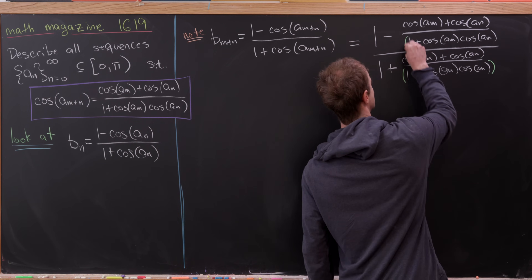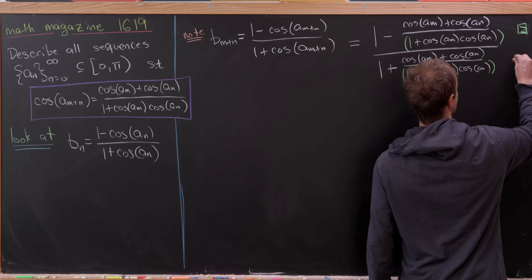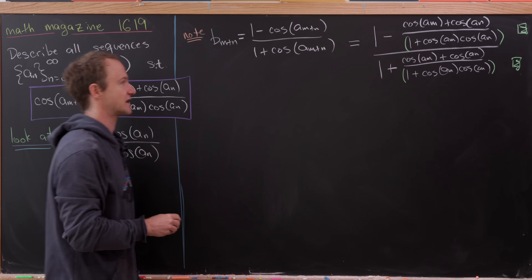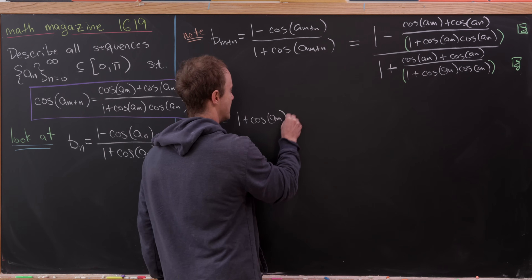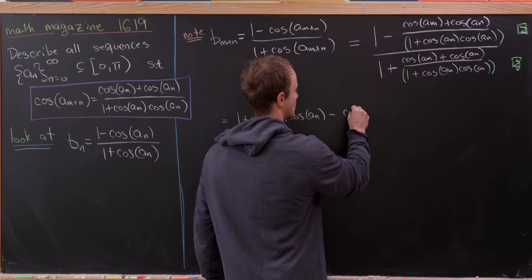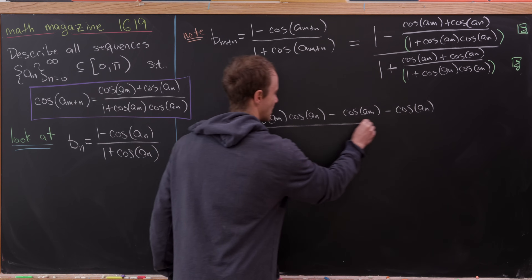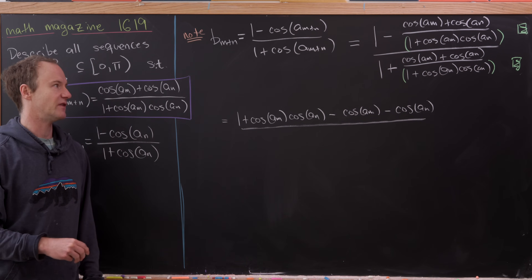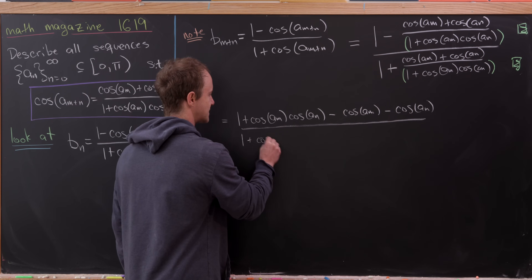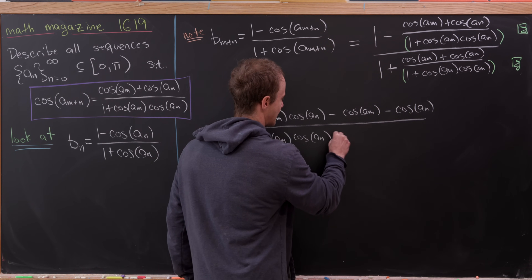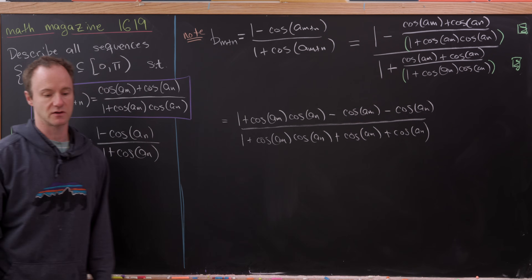We've got a fraction of fractions, so the standard thing to do is multiply numerator and denominator by the common denominator — the green parentheses object. That leaves us with 1 + cos(a_m)·cos(a_n) - cos(a_m) - cos(a_n) in the numerator, and 1 + cos(a_m)·cos(a_n) + cos(a_m) + cos(a_n) in the denominator.